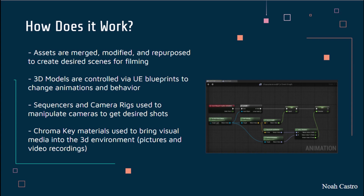Lastly, we have chroma key materials that are used to bring visual media such as pictures and video recordings into the 3D environment. For the recordings, users record themselves on green screens and are able to place themselves into the virtual space by way of these materials.